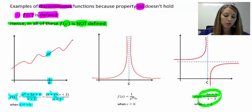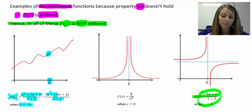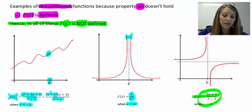In example two, my function is not defined because there is a vertical asymptote. An actual example is something like one over x squared. At zero, there would be a vertical asymptote, and the graph would jump from the left-hand side to the right-hand side, never connecting up at the vertical asymptote.